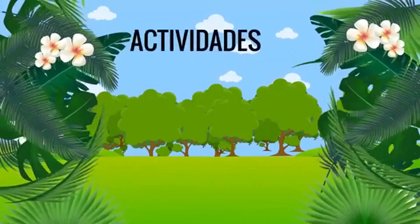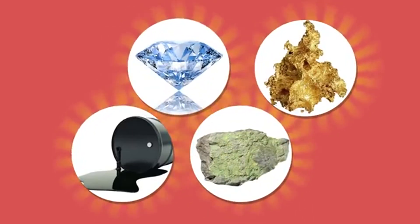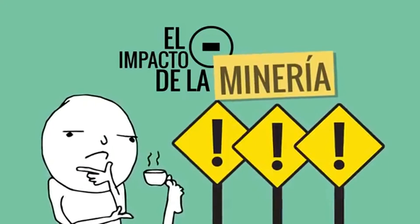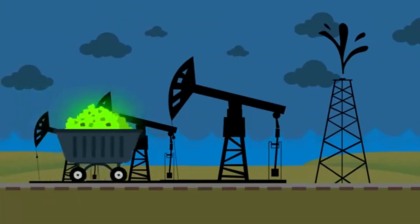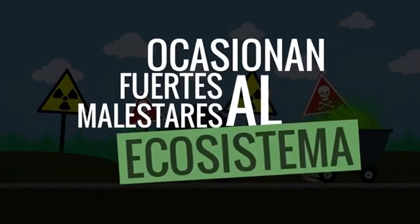Otra actividad no menos peligrosa son las actividades mineras. En las selvas de África y América también se extrae una gran cantidad de petróleo, oro, uranio y diamantes. El impacto negativo de la minería es bastante preocupante, ya que la explotación del petróleo y minerales origina que se derramen al suelo y al agua sustancias peligrosas que envenenan a la fauna local y ocasionan fuertes malestares a nuestro ecosistema. Los cultivos comerciales pueden causar el agotamiento de los suelos, y al incorporar especies foráneas se pueden transmitir enfermedades a las especies vegetales nativas. Las principales amenazas son la tala y quema de los bosques, tráfico ilícito de especies, construcción desordenada de carreteras, la minería informal y la extinción de pueblos indígenas.